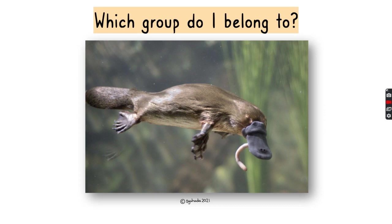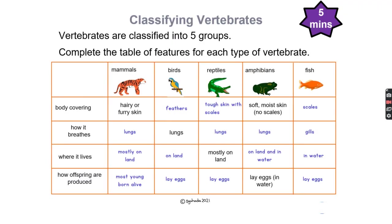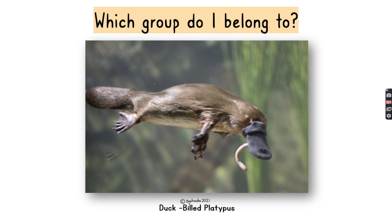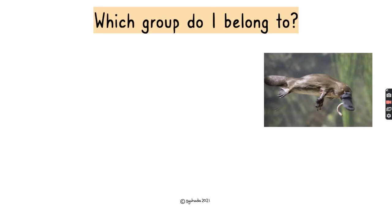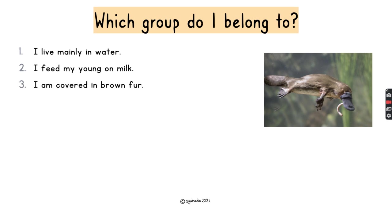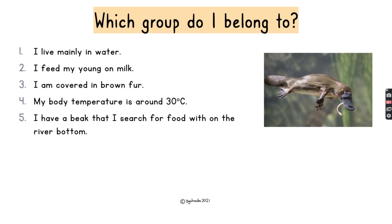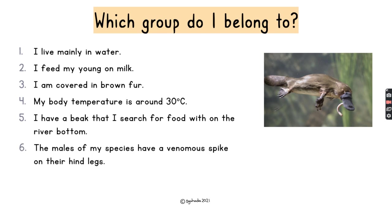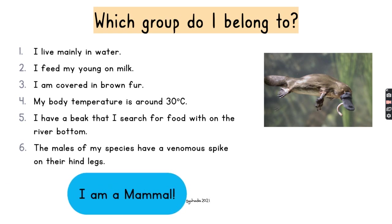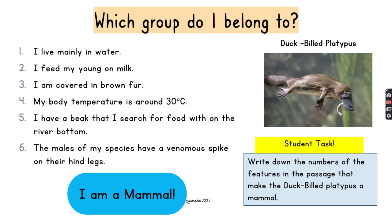Now that you know some of those simple features of vertebrates, I want you to make a guess: which group does the duck-billed platypus belong to? The features of a platypus are: mainly lives in water, feeds its young on milk, covered in brown fur, body temperature around 30 degrees Celsius, has a beak used to search for food on the river bottom, and the males have a venomous spike on their hind legs. The answer is — it's a mammal!